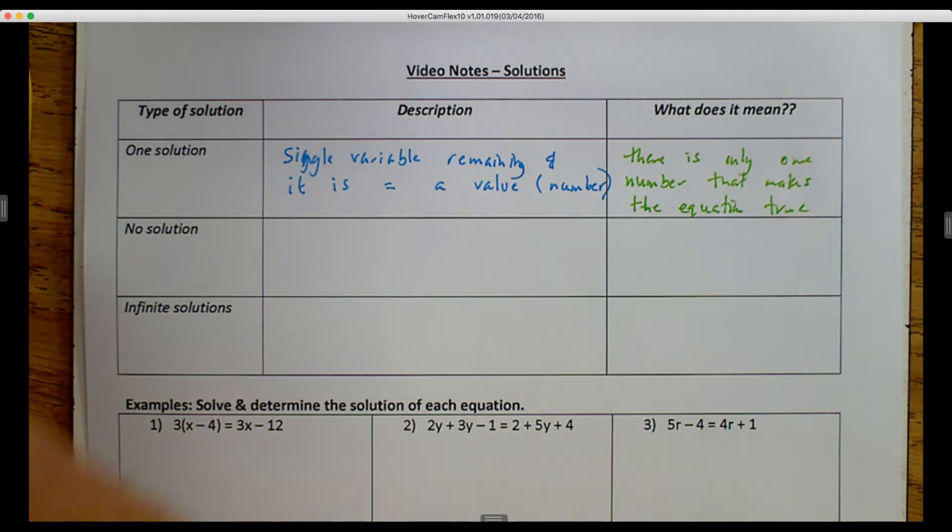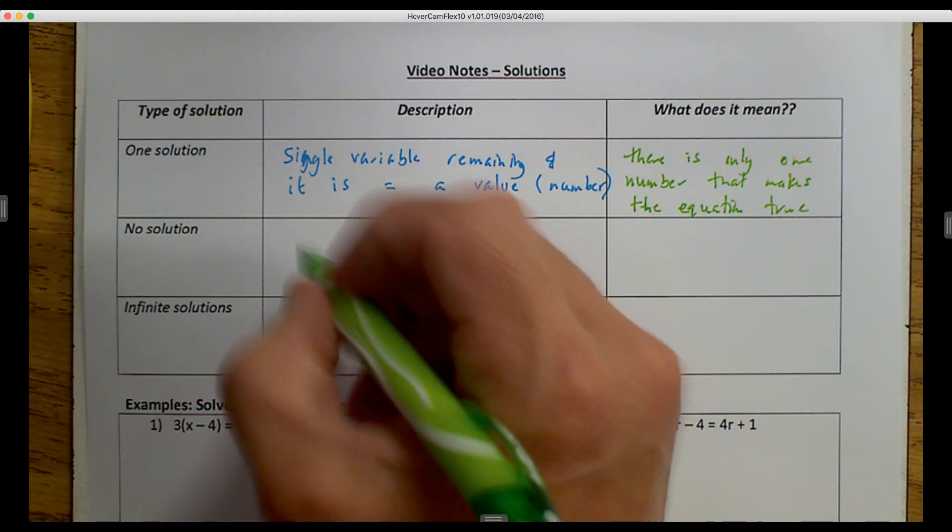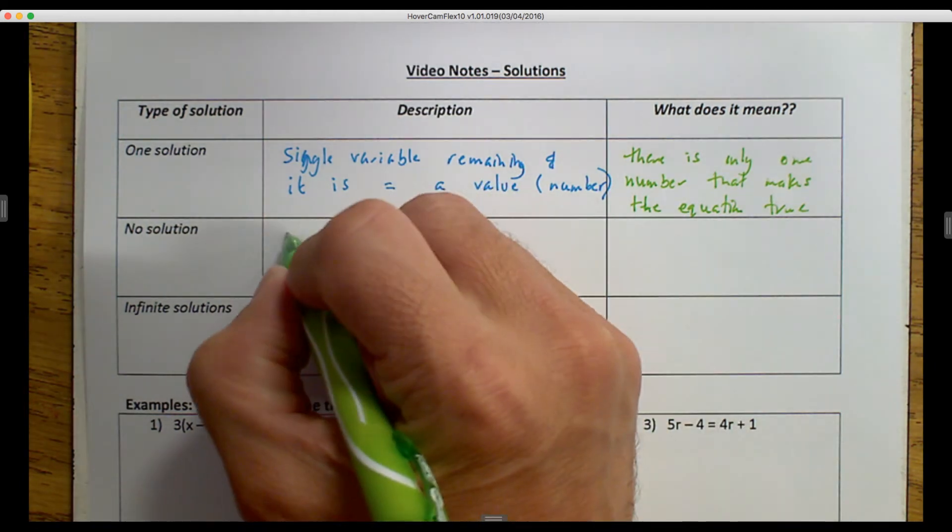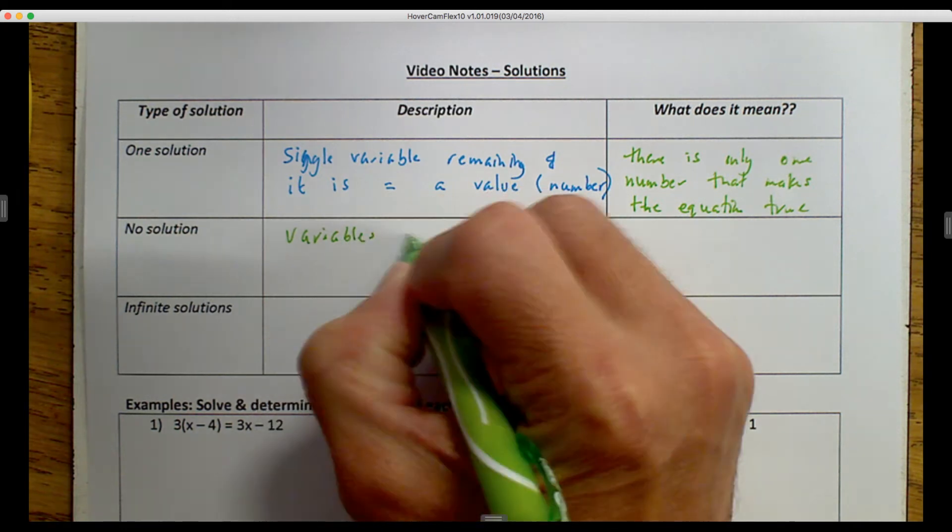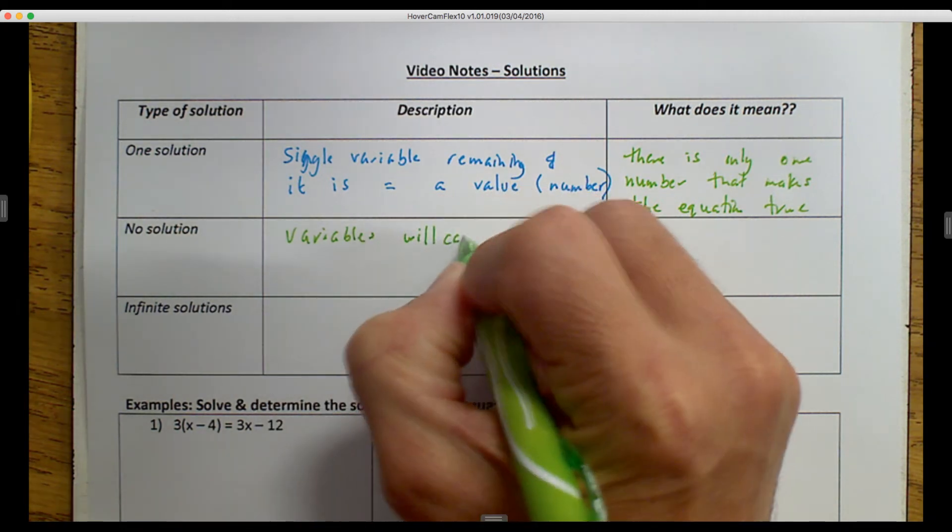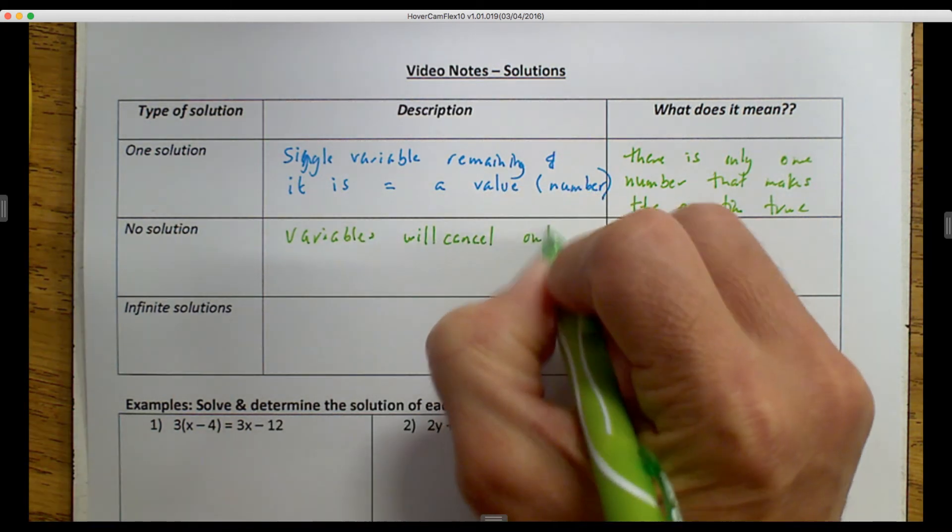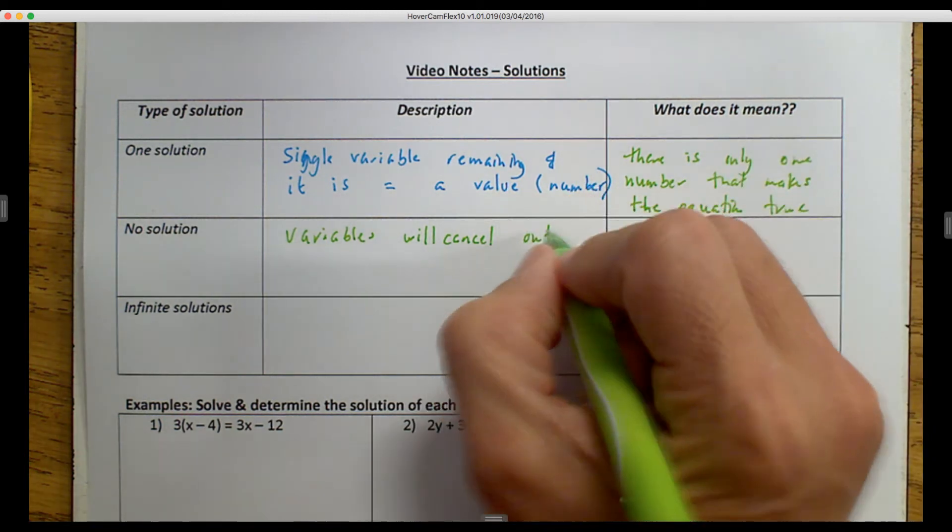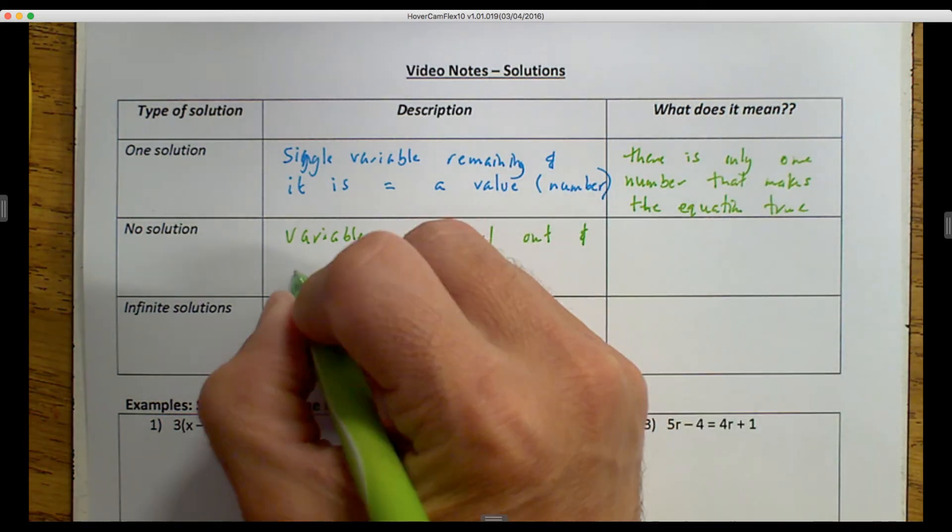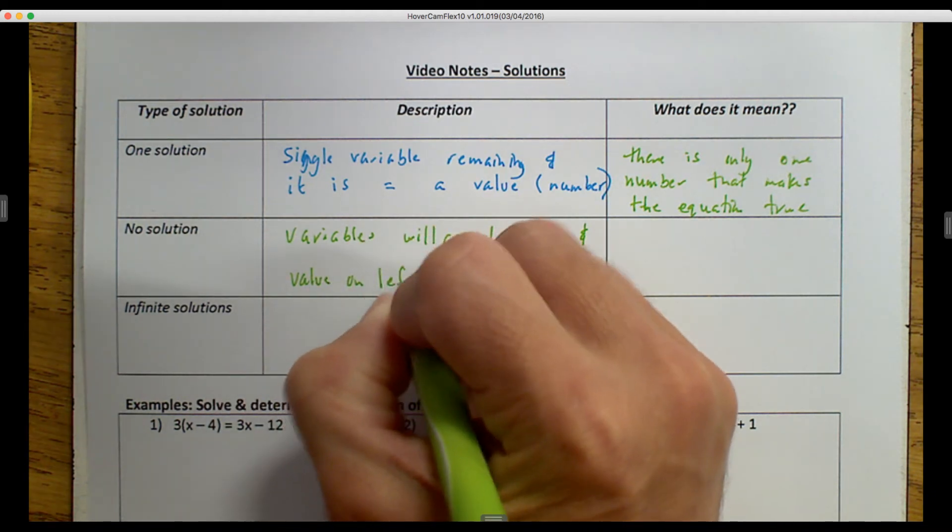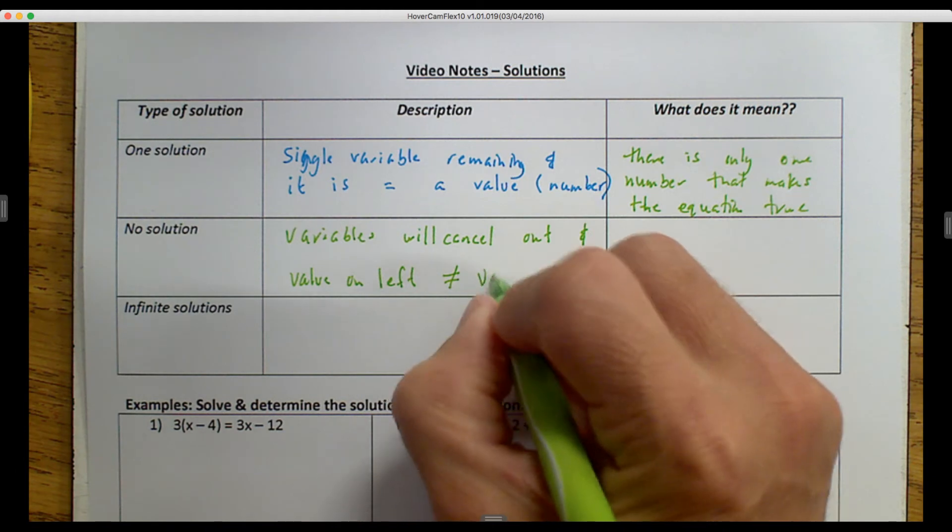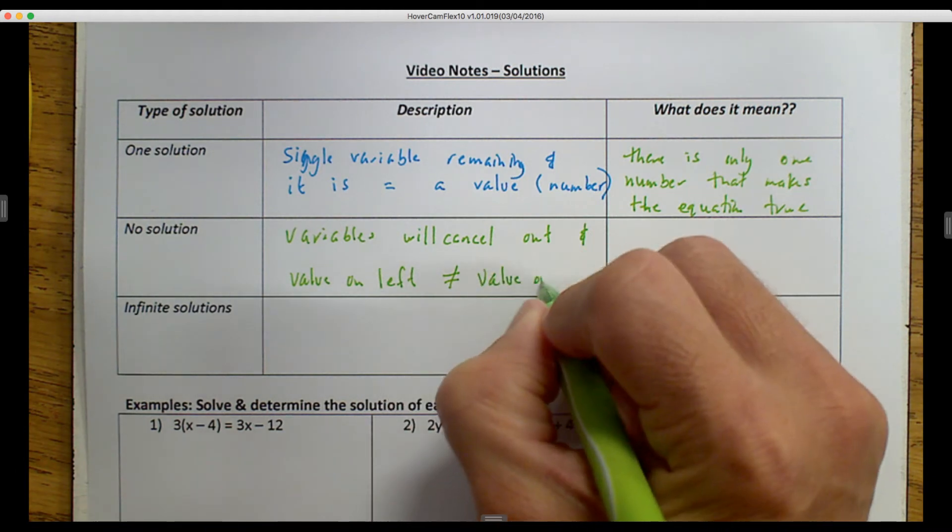For no solution, when you are solving it, what's going to happen is the variables will cancel out, and the left value will not equal the value on the right.